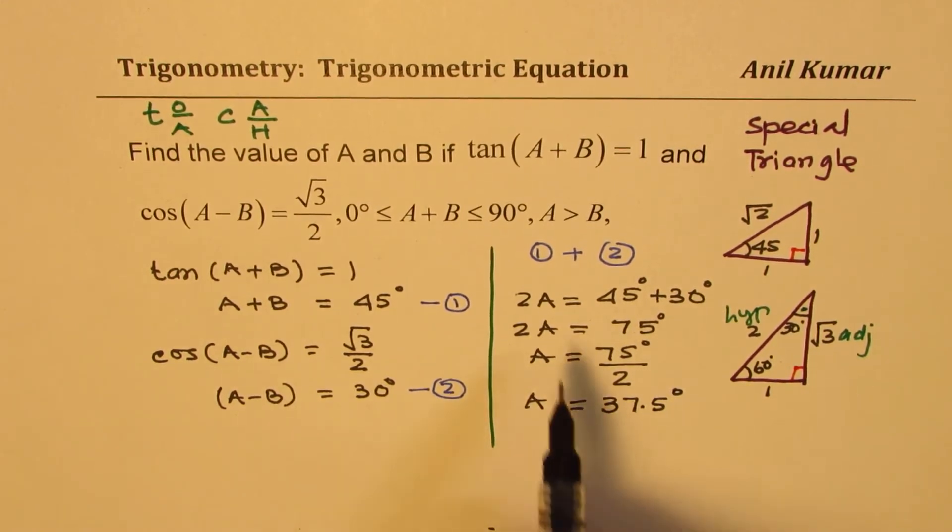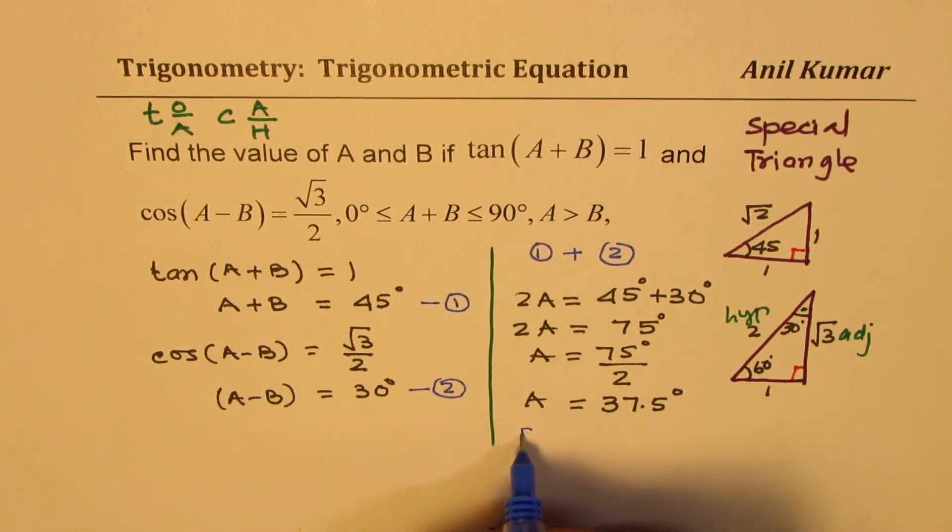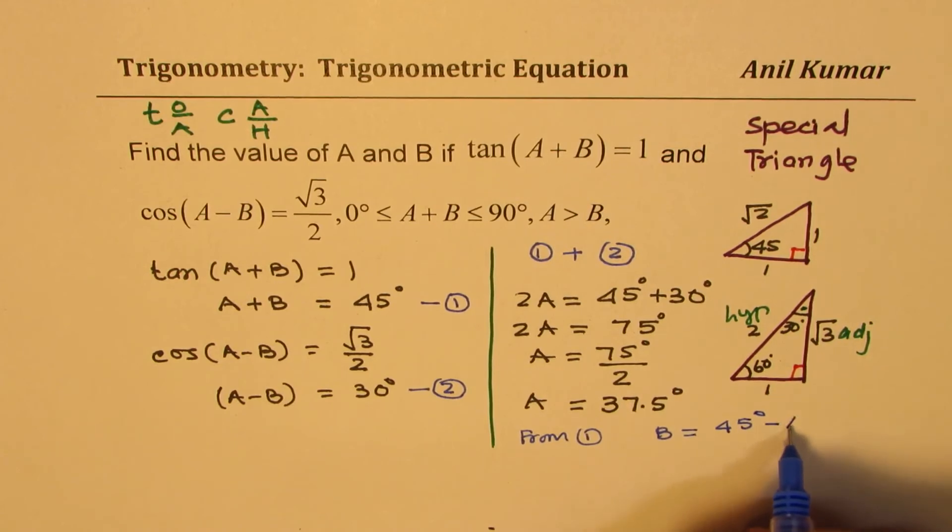Perfect. Now when you subtract it, you can get B, but you could get B otherwise also. Now from the equation, you can say, let's say from equation 1...